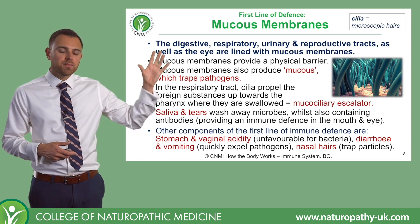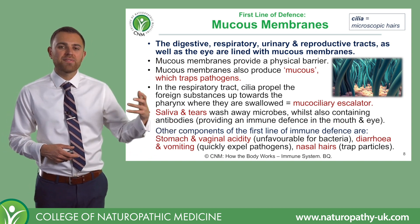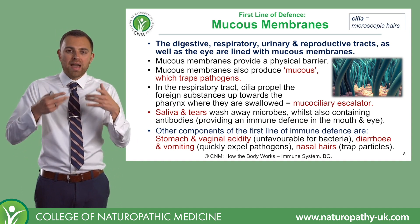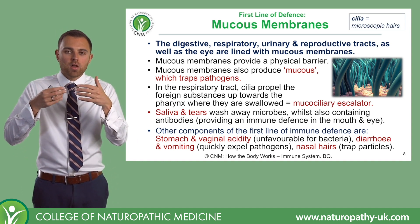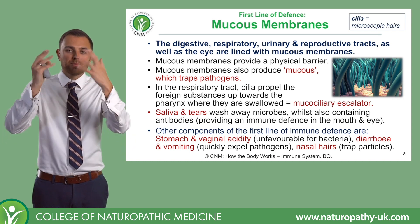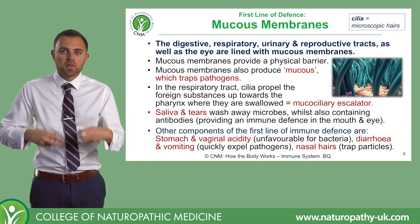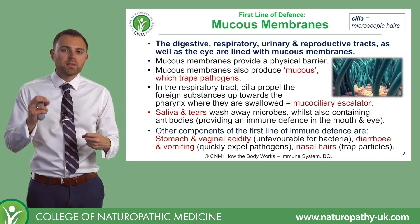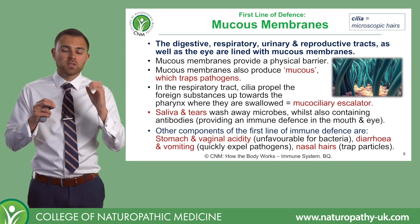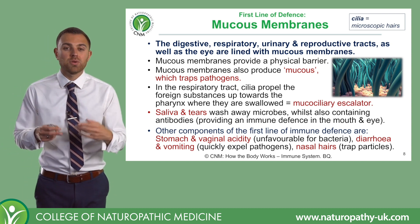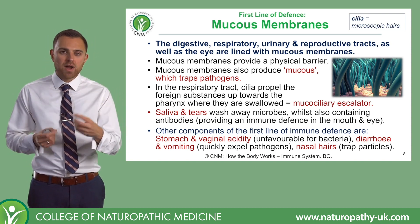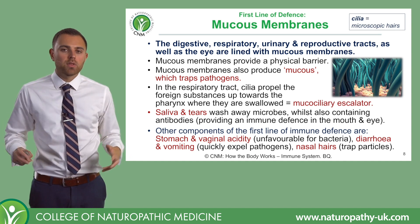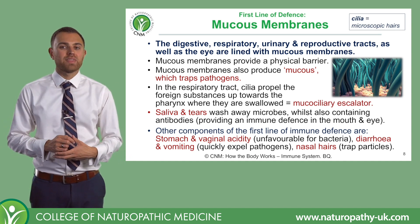In the respiratory system, as you can see here, we have the mucociliary escalator. Those little cilia are able to waft and push mucus up the trachea and through the bronchi. The mucus traps any particles that you inhale, and the cilia sweep those particles out of the system.